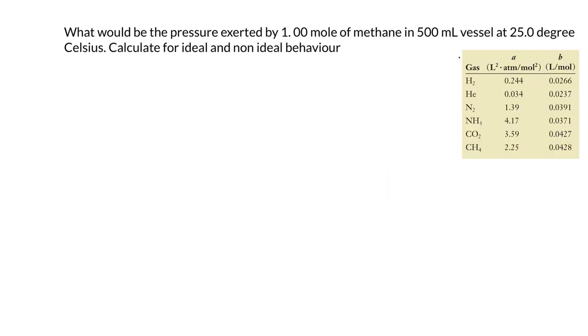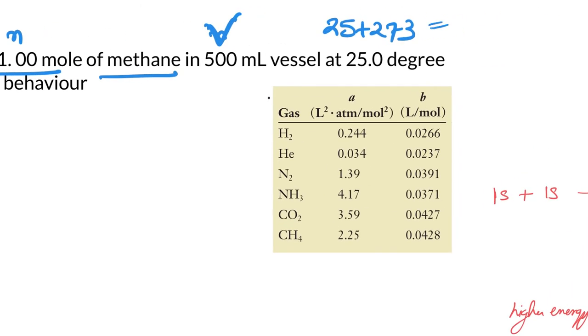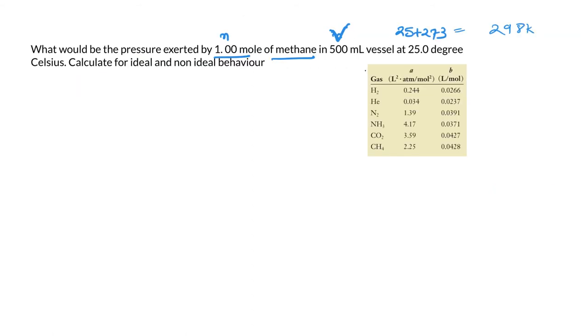What would be the pressure exerted by one mole of methane in 500 mL vessel at 25 degrees? So 25 plus 273, if you do the math, that comes out to be 298 Kelvin. Now you have to calculate the pressure. PV equals nRT. This is the P ideal, so let's first calculate it for ideal behavior. So we have nRT upon V.